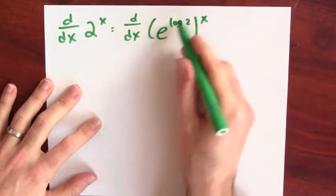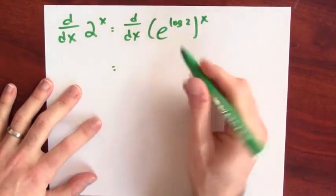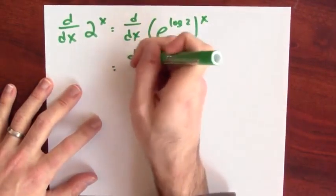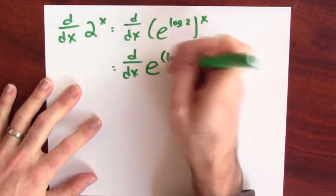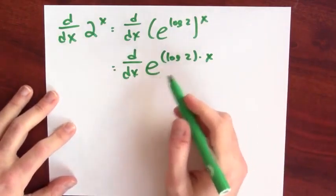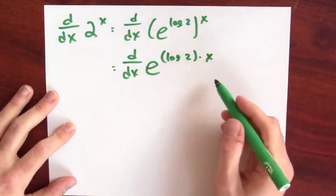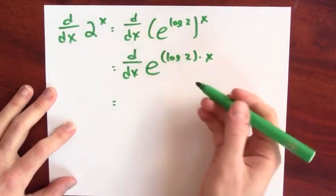But now I've got e to the log 2 to the x, and that's the same as e to the log 2 times x. And now this is a composition of functions that I know how to differentiate. I know how to differentiate e to the, and I know how to differentiate a constant multiple times x. So by the chain rule, it's the derivative of the outside function, which is itself e to the, at the inside function, which is log 2 times x, times the derivative of the inside function, which in this case is log 2 times x, so I'm just going to multiply by log 2.